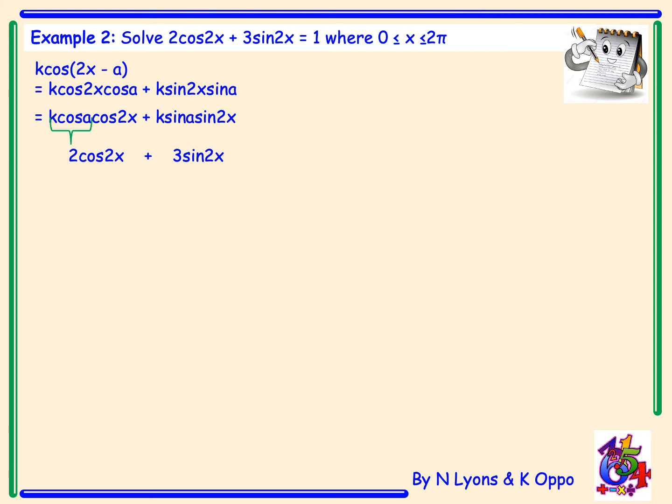So k cos A is going to be the number 2, and k sin A is 3. So we'll clearly state these values. After we've done this we could find the value of k. So k is equal to the square root of 2 squared plus 3 squared, which will be 4 plus 9 which gives root 13.